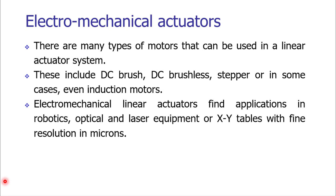In electromechanical actuators, many types of electric motors are used: DC motors, AC motors, stepper motors, and servo motors. Electromechanical actuators find enormous applications in robotics, optics, and laser equipment. Basically, electromechanical actuators are the key element in the automation industry.